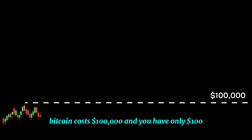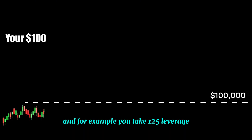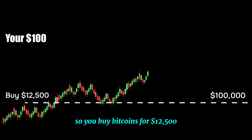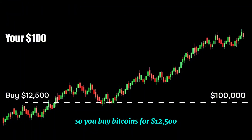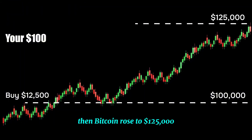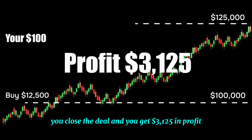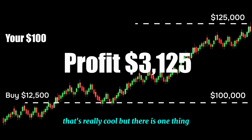For example: Bitcoin costs $100,000 and you have only $100. You take 125x leverage, so you're buying Bitcoin worth $12,500. Bitcoin then rises to $125,000 — you close the deal and get $3,125 in profit. That's really powerful.